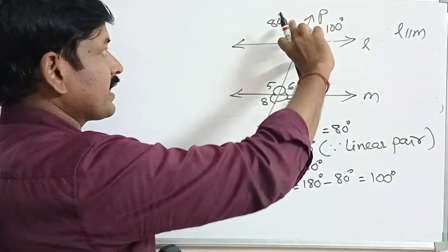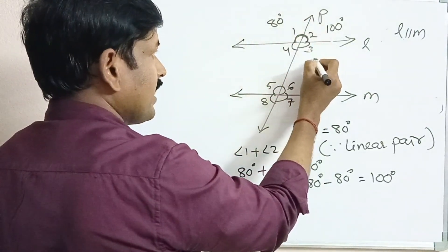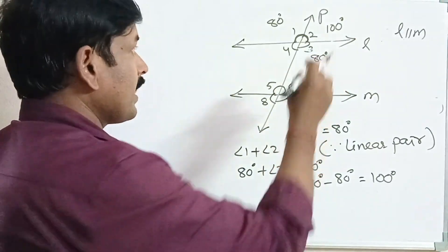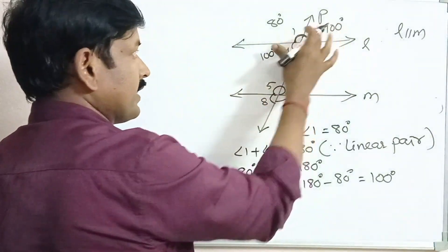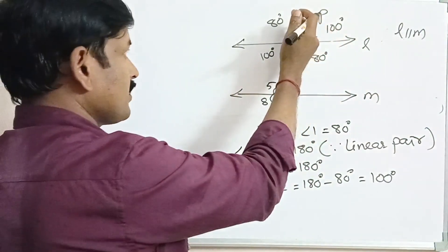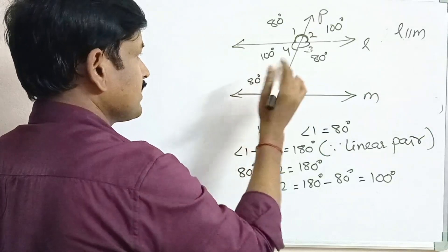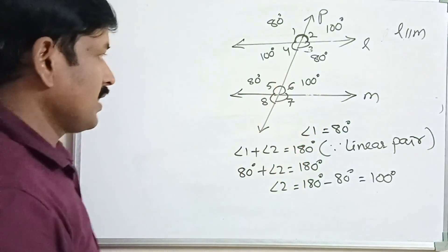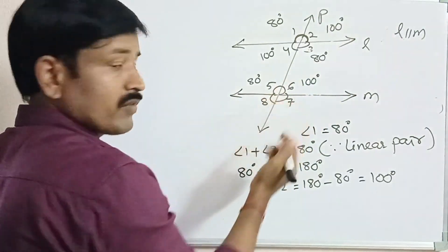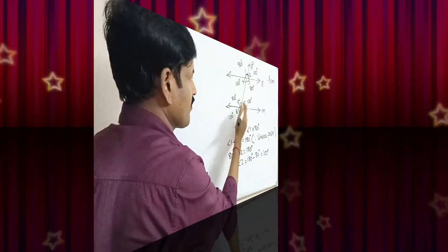As we know, vertically opposite angles are equal: angle 1 = angle 3 = 80 degrees, and angle 2 = angle 4 = 100 degrees. Now, corresponding angles: angle 1 and angle 5 are also equal, so angle 5 = 80 degrees. Angle 2 and angle 6 are equal, so angle 6 = 100 degrees. Angle 6 and angle 8 are vertically opposite, so angle 8 = 100 degrees. Angle 7 and angle 5 are vertically opposite, so angle 7 = 80 degrees. Thank you.